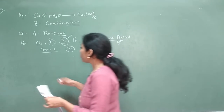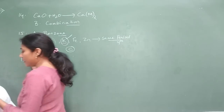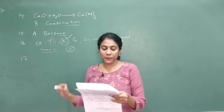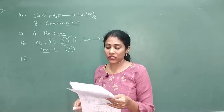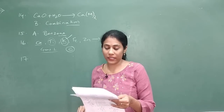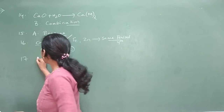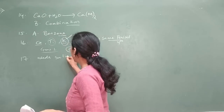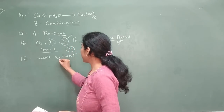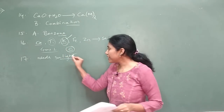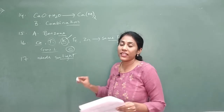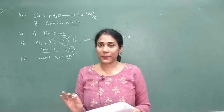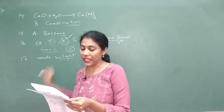Question 17: the reaction 2AgBr → Ag + Br₂. This chemical reaction is endothermic. Why? Because this reaction needs sunlight — it is a decomposition reaction requiring energy. Whenever energy is required for a reaction, we call it endothermic.